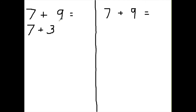Now, where did that 3 come from? That 3 came from the 9. And if we took 3 from 9, how many would we have left? There are different ways to figure that out — you can draw 9 circles and take away 3, or you can do it in your head. But 9 take away 3 is going to give you 6.